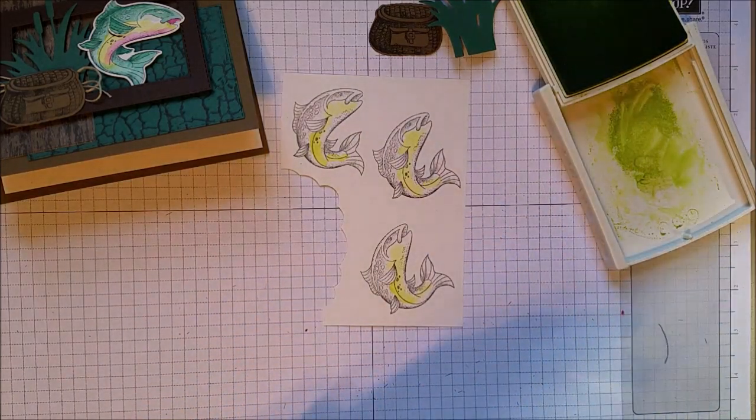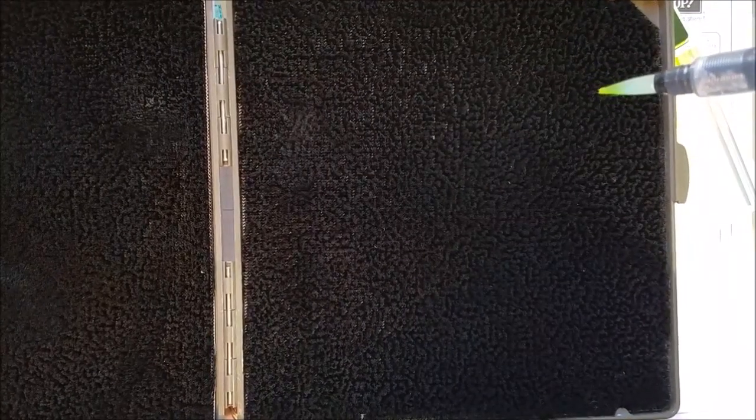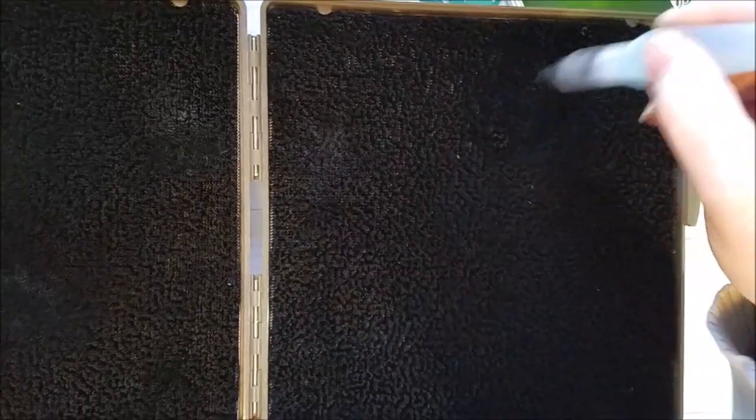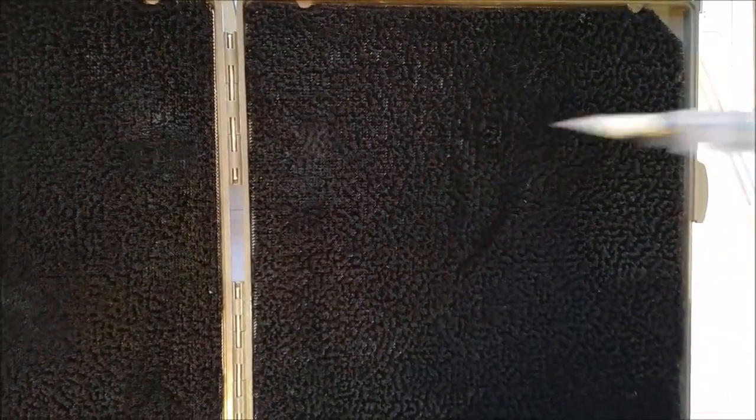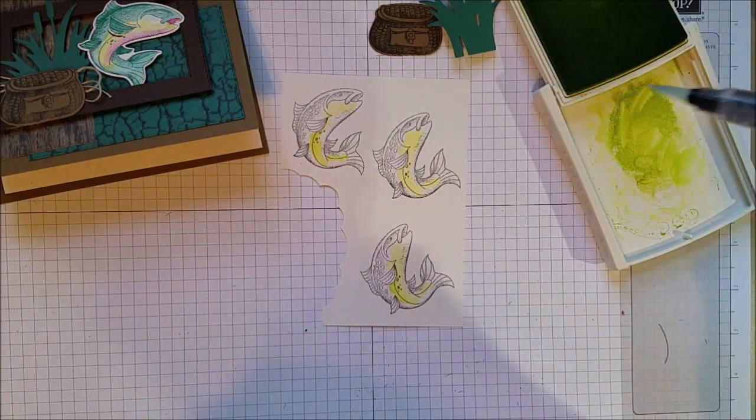Another thing I want to show you is what I do in between colors. You just need to squeeze the barrel a little bit. Some water will drip out which kind of rinses your brush. And then I go like this on a stamping scrub to clean that color off. You don't have to have a cup of water near you to use the Aqua Painter which is another nice thing.